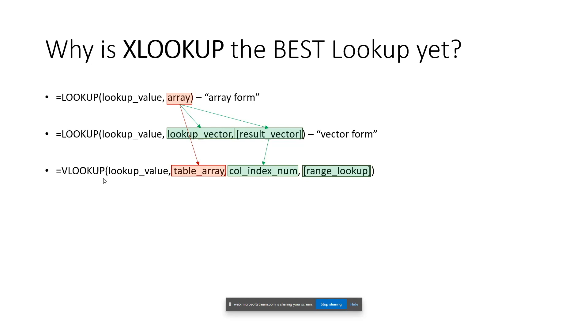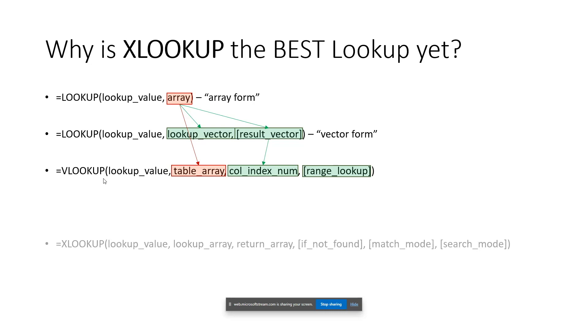The other room for improvement with VLOOKUP is that while you can tell it to give you an exact match — which is great — if you want an approximate match, it defaults to giving you the next item smaller. That could be improved, and yes, that's exactly what they did with XLOOKUP.